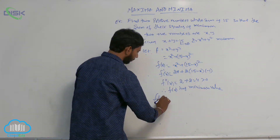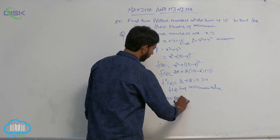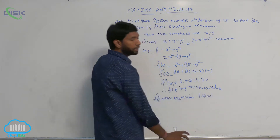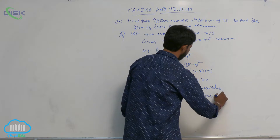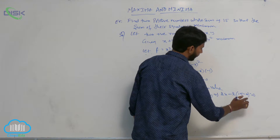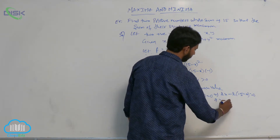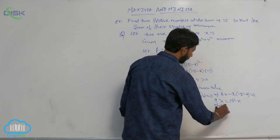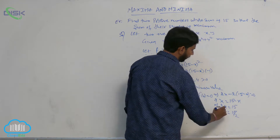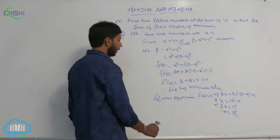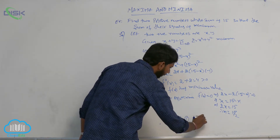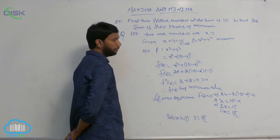For maxima or minima, set f'(x) equal to 0. This implies 2x minus 2(15 minus x) is equal to 0, which gives x equal to 15 minus x, so 2x equals 15, therefore x equals 15 by 2. Substituting back into equation 1, y is also equal to 15 by 2.